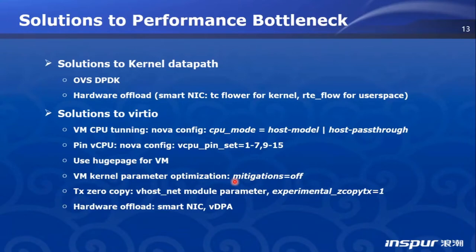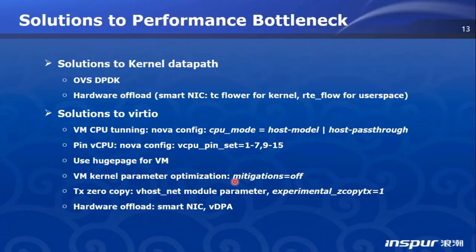For VirtIO, we have many methods to improve it. We can change the OpenStack Nova config to use the host CPU model for QEMU. We can change Nova config to use vCPU pinning. We can change the OpenStack flavor to use huge pages for the VM. These methods improve VirtIO performance but not remarkably. The kernel boot parameter 'mitigations=off' can improve VirtIO very significantly as it improves overall VM kernel performance. On the compute-node side, using the VHOST-NET kernel module option 'experimental_zcopytx=1' also yields very large performance improvement. Of course, the best method is VDPA and SmartNIC.